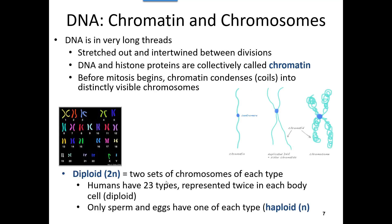The DNA inside cells is very long and thin, and it gets stretched out and intertwined between divisions. When it's not doing anything, we see it as a long, very skinny thread called chromatin. When the cell starts to divide, that chromatin begins to condense — it coils up on itself around histone proteins. When it condenses enough, it becomes visible, and we see this as what we call a chromosome. So chromatin is the actual DNA when it's not wound up; it's only when the cell is getting ready to divide that it coils up tightly and we see it as a chromosome.